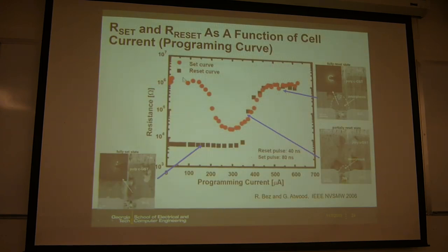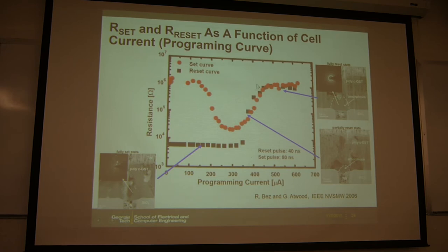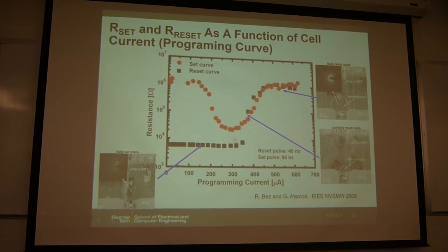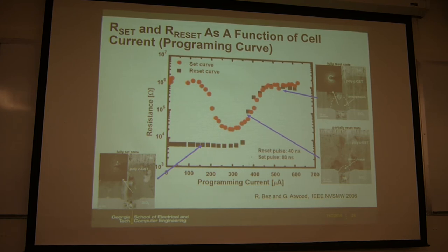Here is some experimental data for the phase change memory cell. The reset curve shows nothing happens until you pass a large current, like 500 microamps, after which resistance goes up upon quenching. For the set curve, you start with the reset state and gradually increase the programming current — the resistance goes down as it recrystallizes. But you cannot apply too large a current or it will reset again, so you must control the amplitude and duration.